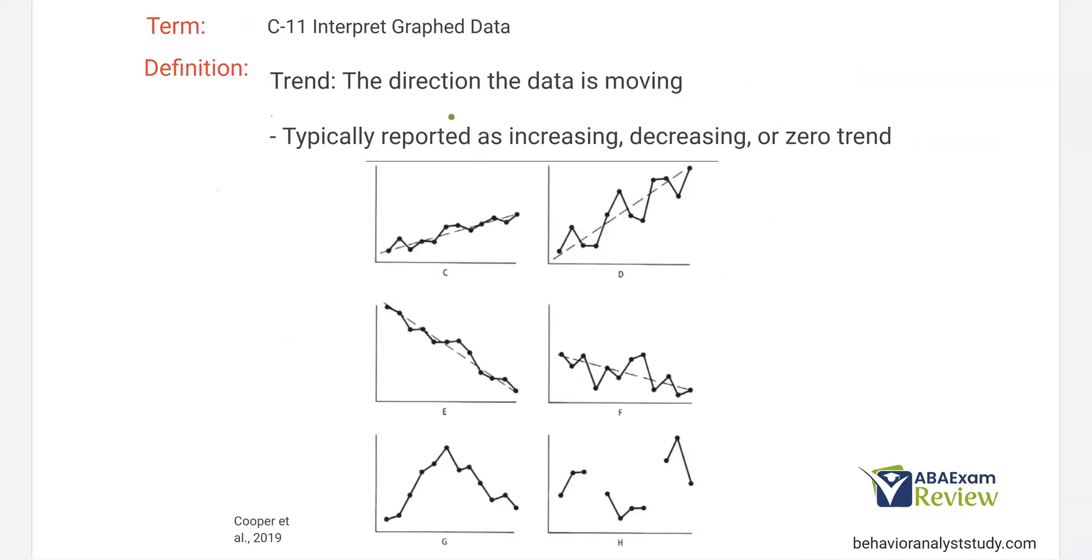And then probably the easiest one, the most common we talk about, the trend. What direction is data moving? Typically reported as increasing, decreasing, or zero. So C, we have a slightly increasing. D, we have a significant increasing. E and F are both decreasing. G and H, we don't really have a trend, right? G, we're going up, but then we go straight back down. H, we're all over the place.